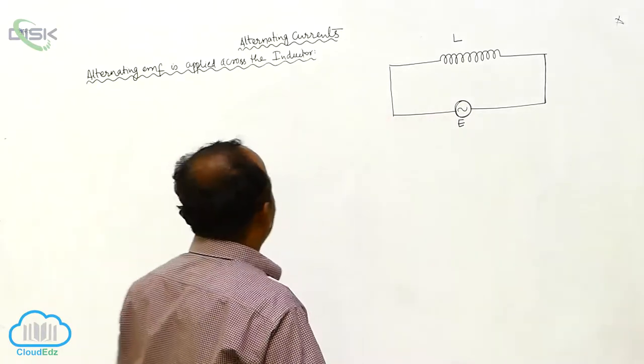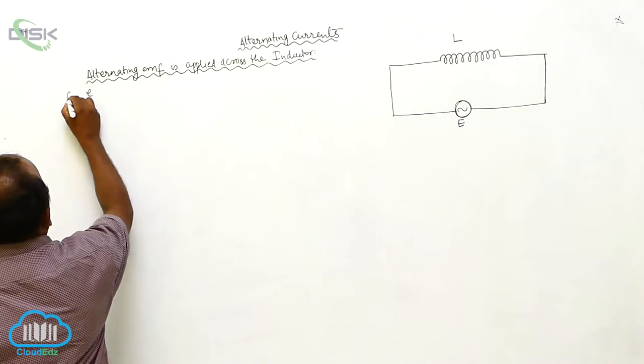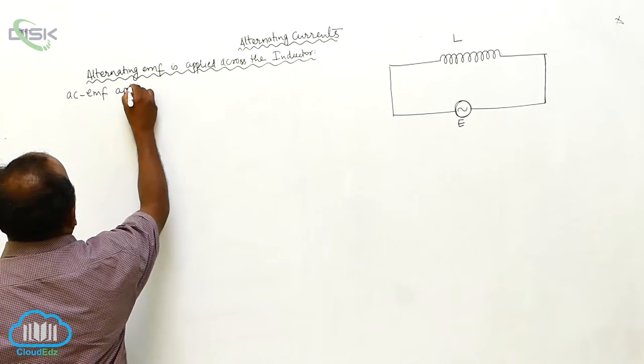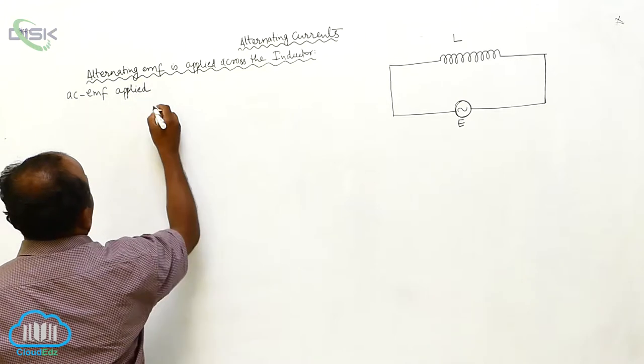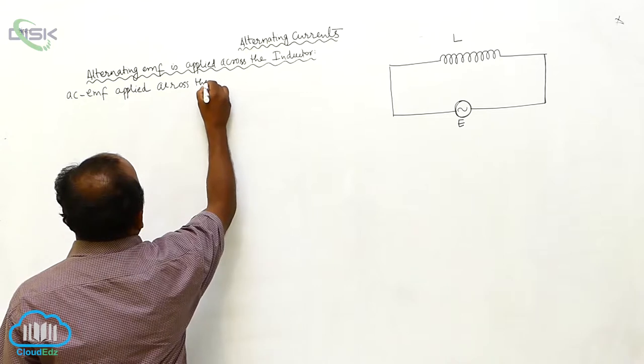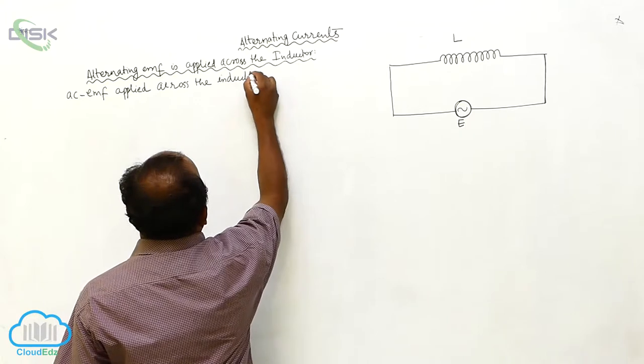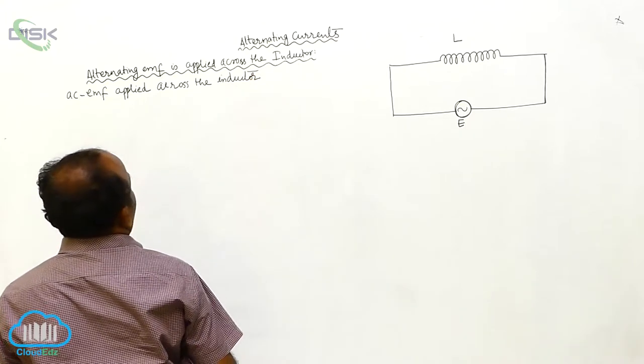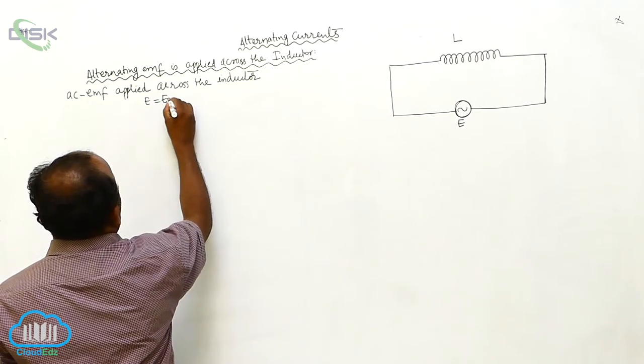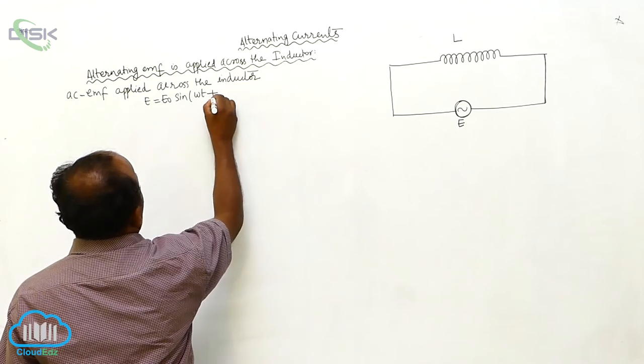What is the EMF applied? AC EMF applied across the inductor. E equals E0 sin ωt plus phi.